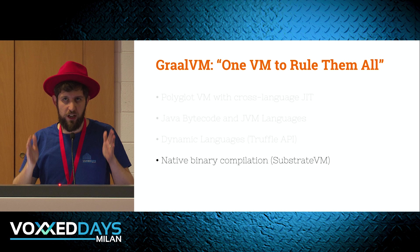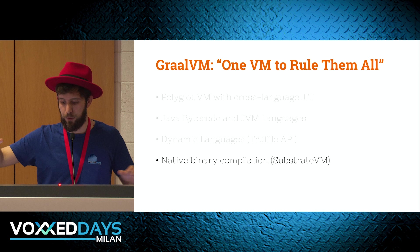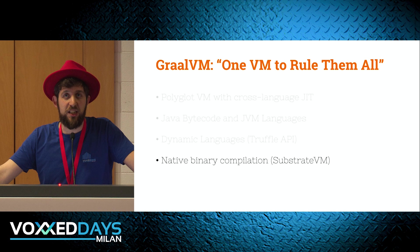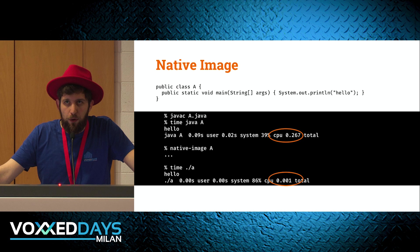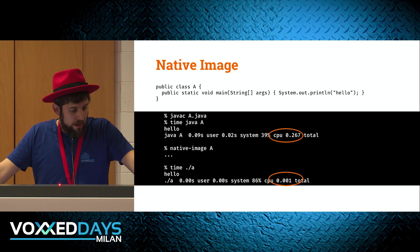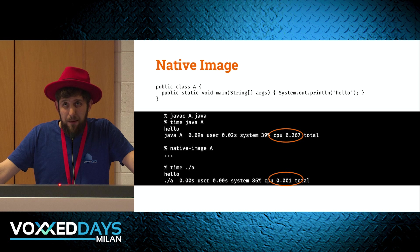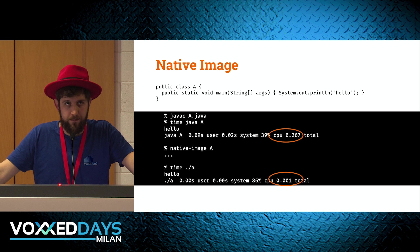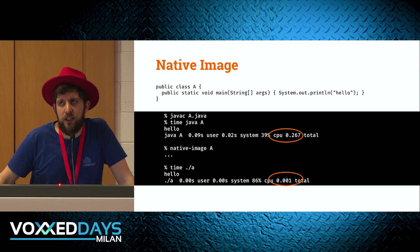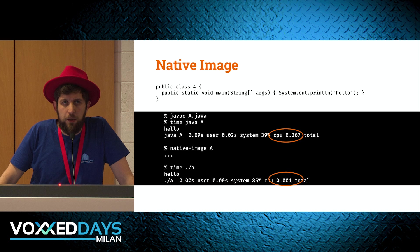With Substrate VM's native image, you can take your JVM program and compile it into a standalone binary executable that runs without a JVM. As a simple example: a boring Hello World, run through javac and timed on my machine, takes a little over 200 milliseconds. Compiled with the native image compiler from GraalVM, it takes one millisecond. I've done nothing — I took the same program and ran it through the native image compiler. So at this point you might ask: I have an application that takes three seconds — can I get better performance by just running native image?